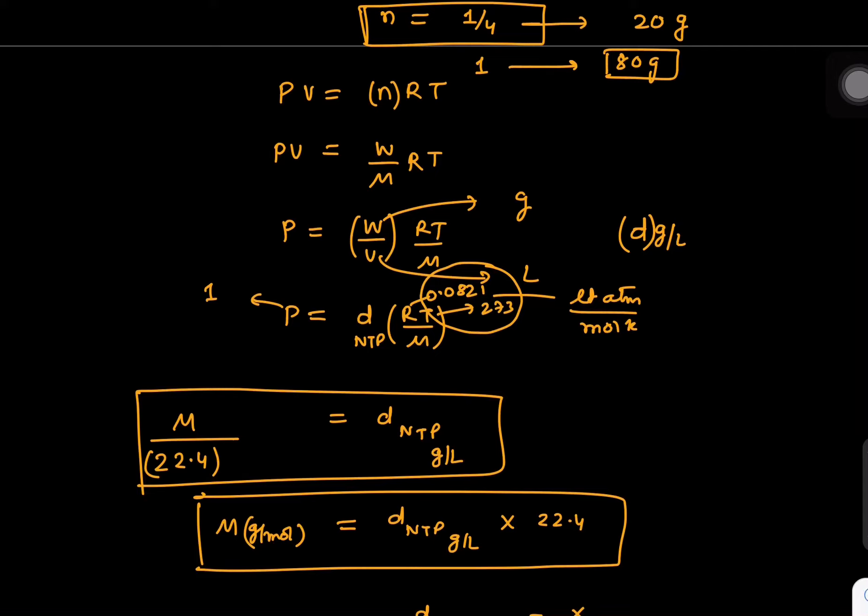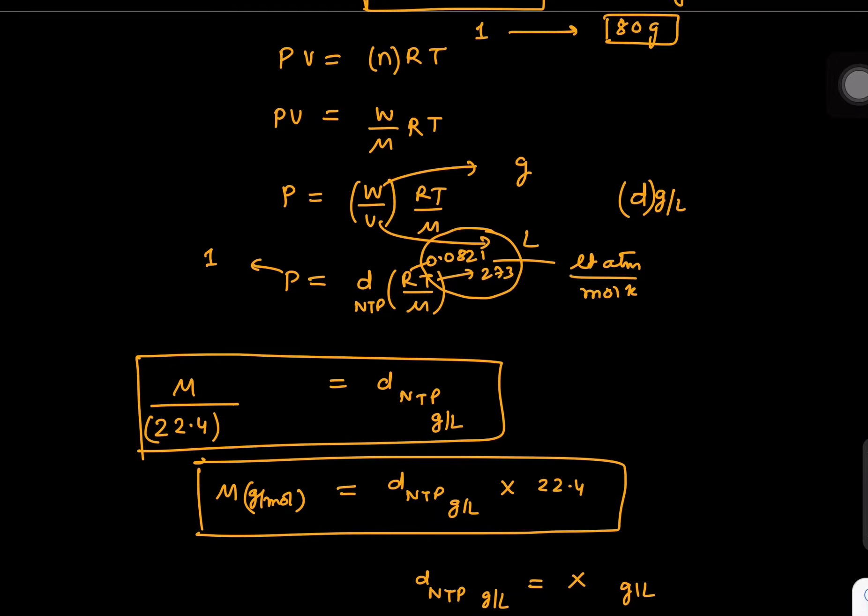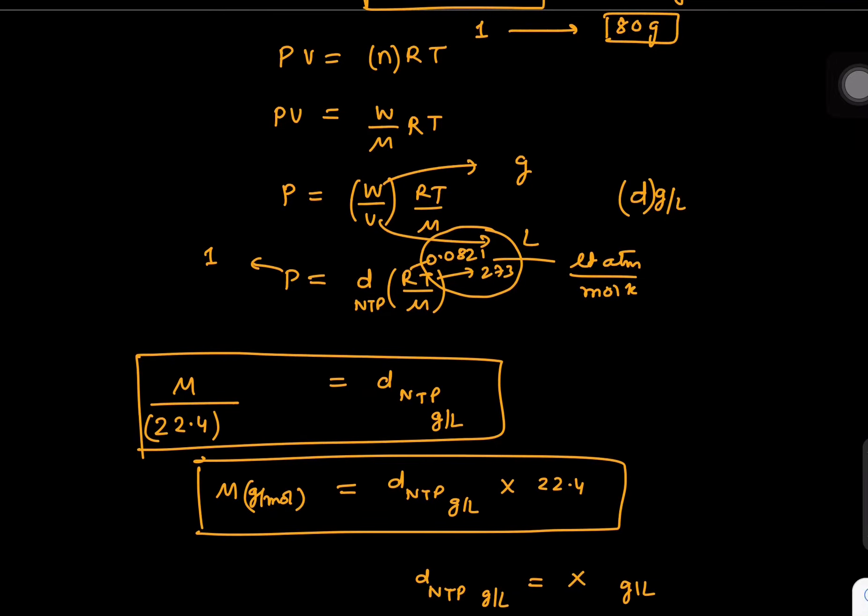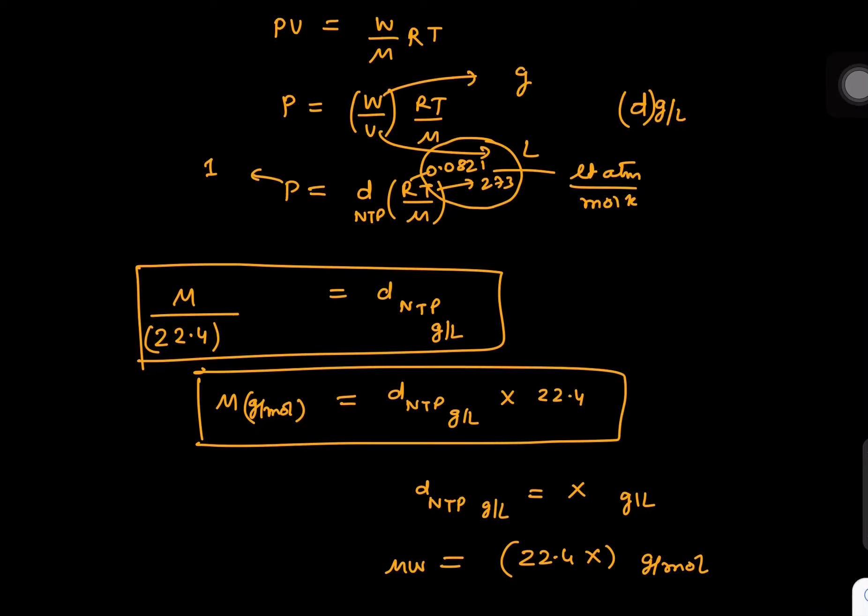If somebody gives you a question that density of gas is x grams per liter, find out molecular weight, you can simply say x times 22.4 is your answer. I hope you understood this question and you can try any such question of this type.